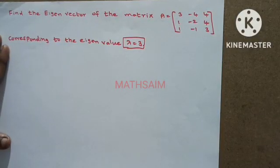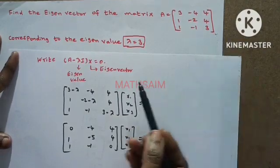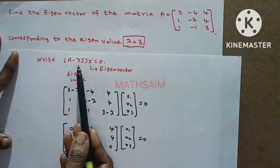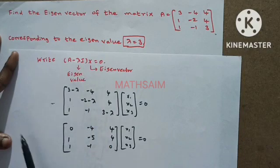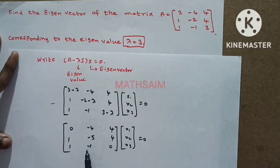First thing, A minus lambda I into x equal to 0 equation, this is the given matrix and this is the given eigenvalue. So, using this, A minus lambda I into x equal to 0 equations, I will get it. So, it will be lambda I equal to 3 substitute and it will be reduced to this matrix.